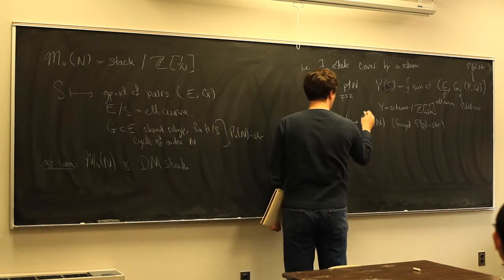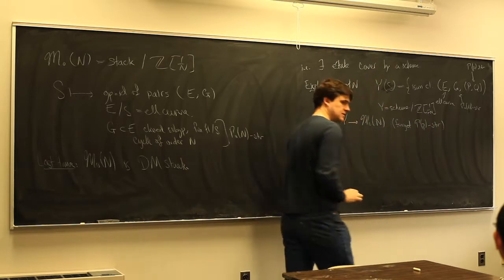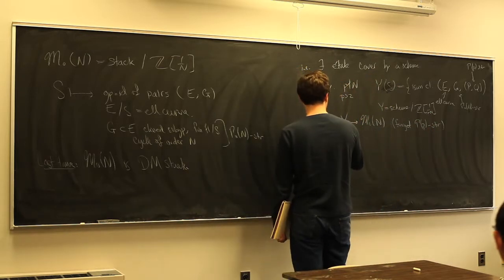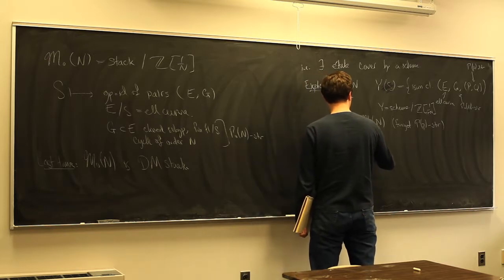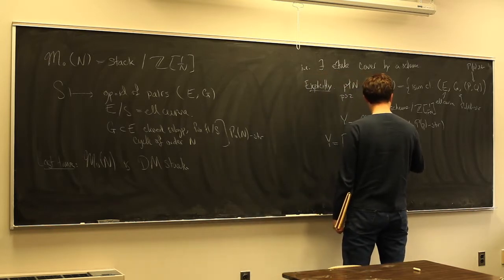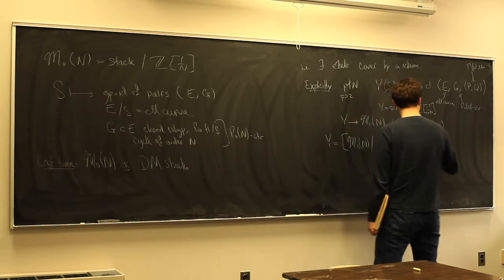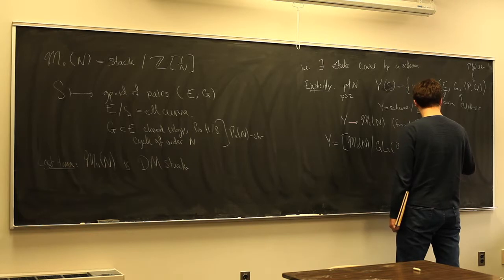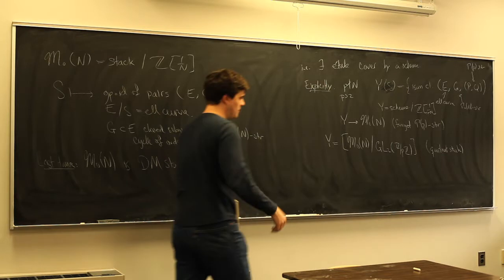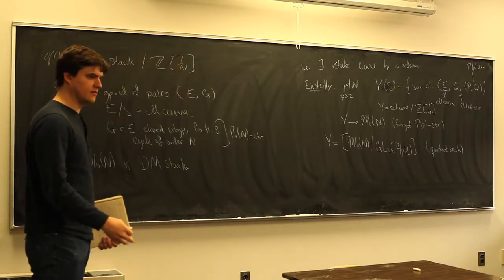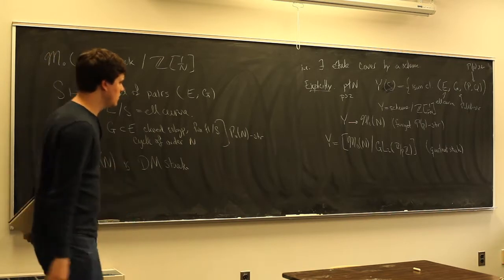M₀(n) is the quotient of Y by the GL₂(Z/pZ) action — it's the quotient stack. This is also how we even constructed the schemes Y(n) last time for certain n, using Y(3), adding structure, and then taking quotients.